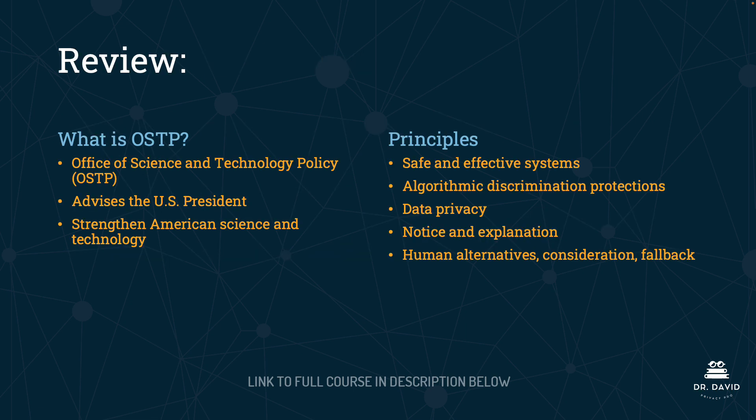In this lecture, we reviewed the White House blueprint for an AI Bill of Rights. We started by defining the OSTP — the Office of Science and Technology Policy within the White House, responsible for advising the U.S. President, with a top-line mission to strengthen American science and technology. We then covered the five principles: safe and effective systems, algorithmic discrimination protections, data privacy, notice and explanation, and human alternatives, consideration, and fallback.